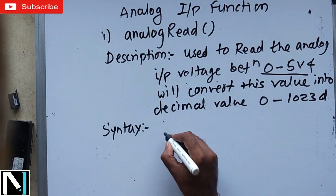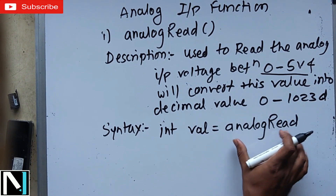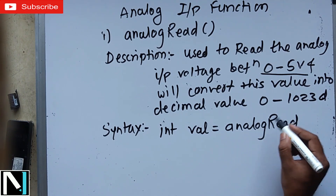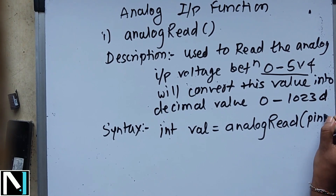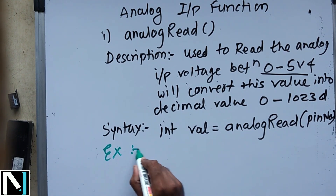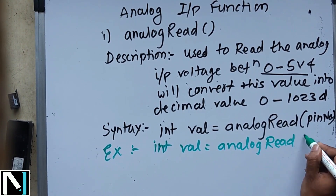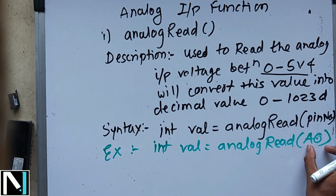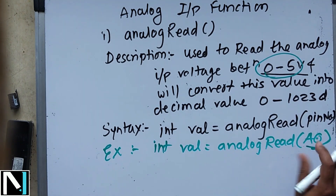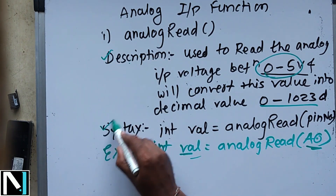The syntax of analogRead is: int val = analogRead(pin); — note that 'analog' is lowercase and only 'R' in Read is capital. The pin here is the analog pin number from which you want to read. For example: int val = analogRead(A0); — whatever analog input voltage is present at pin A0 will be read and stored as a decimal value from 0 to 1023 in the variable val.